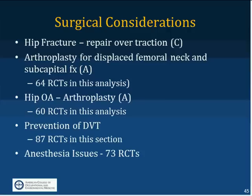Regarding surgery: repairing a hip fracture over traction has C-level evidence. Arthroplasty is indicated for displaced fractures of the femoral neck or subcapital fractures, with many RCTs in the analysis. There are also many RCTs for replacing a hip with bad hip arthritis, where patient selection, age, willingness, and comorbidities are very important. There are many RCTs on preventing DVTs through anticoagulation, and anesthesia issues are also well-studied — these primarily apply to those doing the surgery and aftercare.